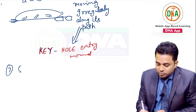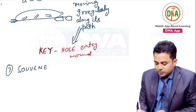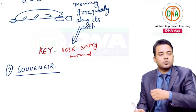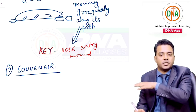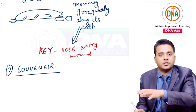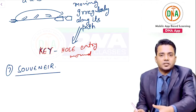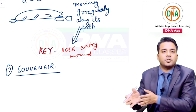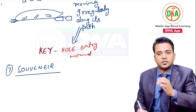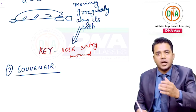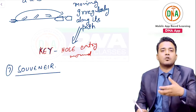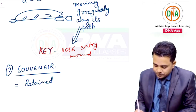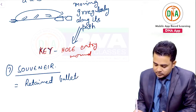Next are souvenir bullets. Sometimes bullets lodged in the vertebra are left in place because retrieval would cause more damage than benefit. Over time these bullets become fibrosed. Such fibrosed, retained bullets inside the body are called souvenir bullets.